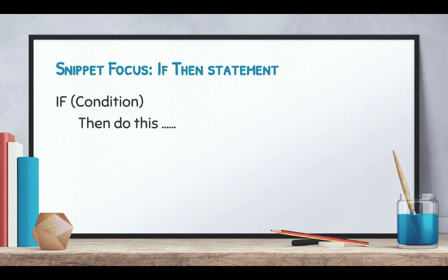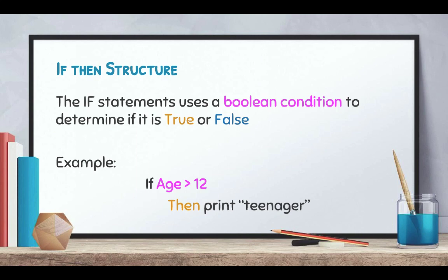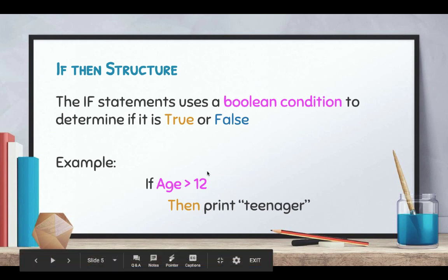So how does it work? We're going to focus firstly on the if-then statement — if a condition is true, then do this. The if statement uses a Boolean condition to determine if the answer is true or false. For example, if age is greater than 12 then print 'teenager'. If age is 11, that's not greater than 12, so the condition results in false. But if we put in 13, because 13 is greater than 12 it becomes true, and it executes the then part.